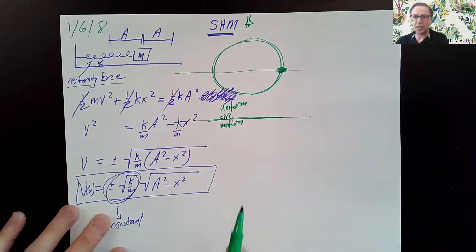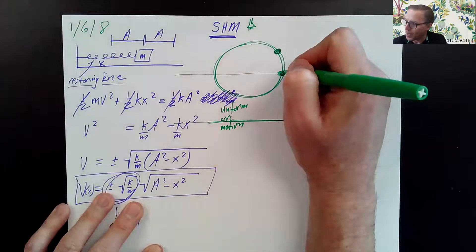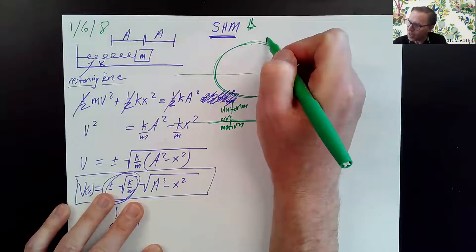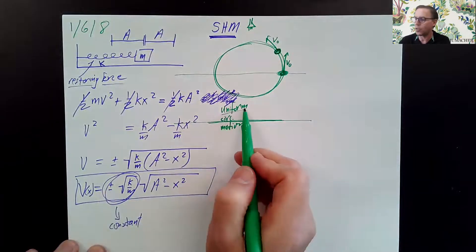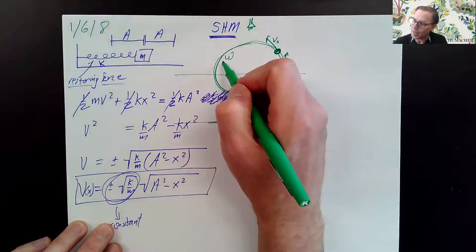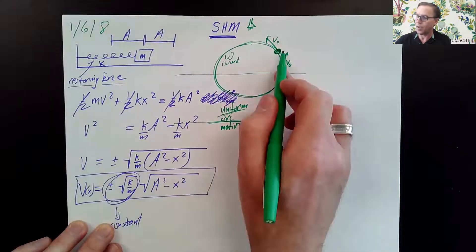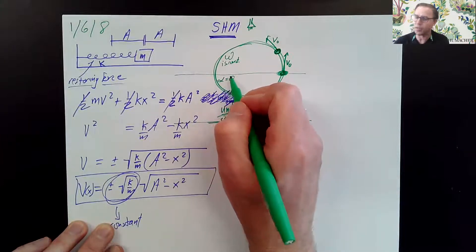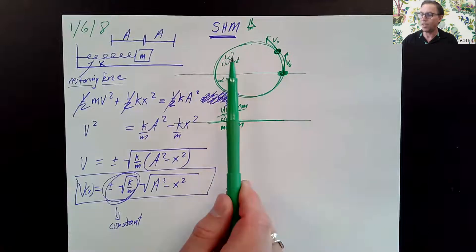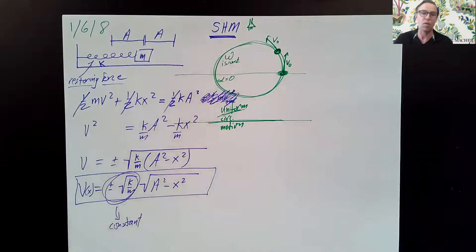I'm going to look at some general position on the circle. I'll call the ball's speed V naught. Because the circular motion is uniform, its speed is still V naught everywhere — it doesn't speed up or slow down. Omega is constant, angular acceleration alpha is zero. All of those are different ways of saying uniform circular motion: the speed doesn't change, the angular speed doesn't change, the angular acceleration is zero.